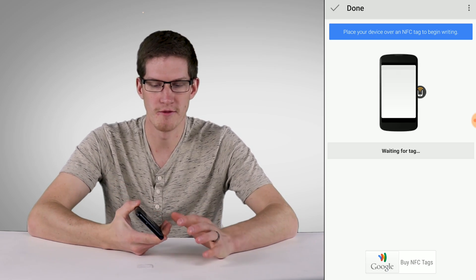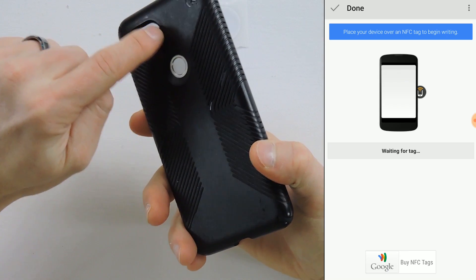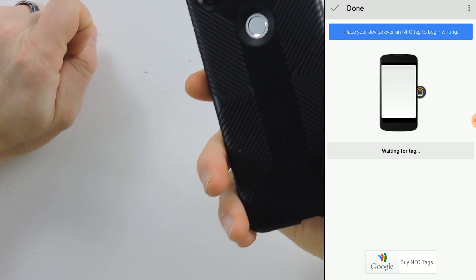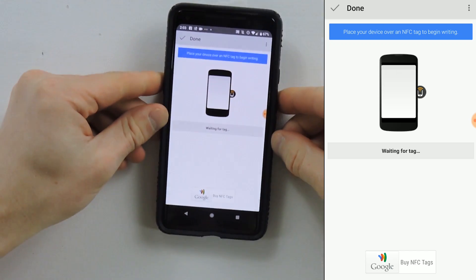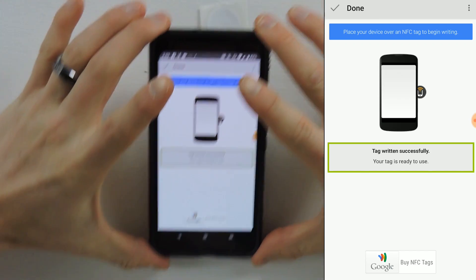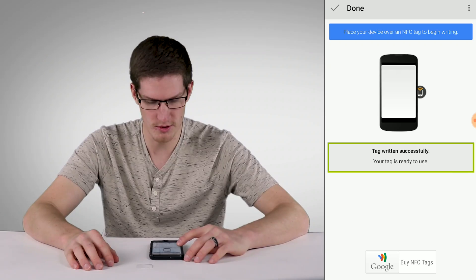The NFC radio on my phone is actually right in the center top of the device here. So I'll just plop it on there.